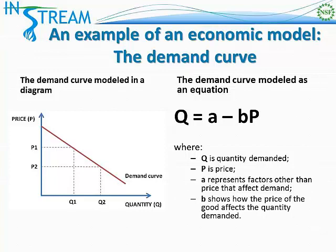This is a model because there are probably many other things that determine an individual's demand for a good or service. And in some special cases, this downward sloping relationship may not hold for some very undesirable products — even if that product is incredibly cheap, you may not actually increase your demand for it. But in general, this gives us a pretty good representation of what people do in terms of their demand for a good or service when they see the price.